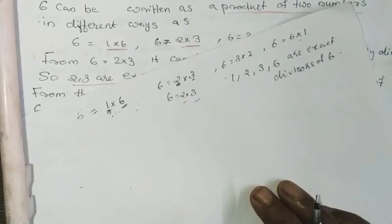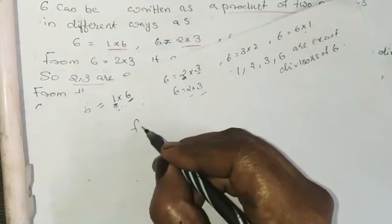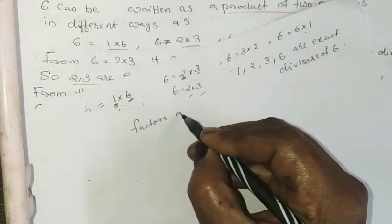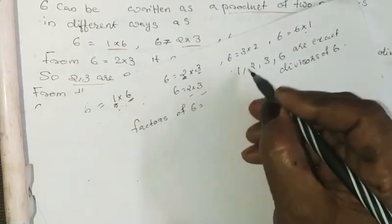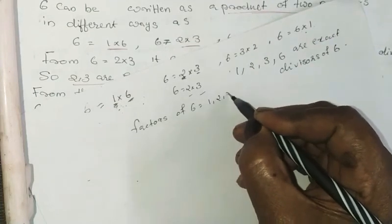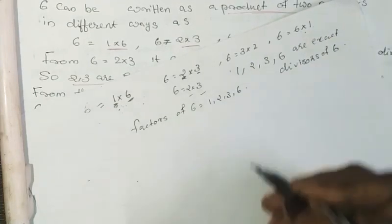They are called the factors of 6. Factors of 6 are equal to 1, 2, 3, 6.